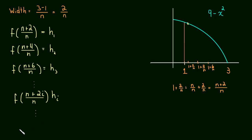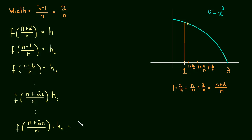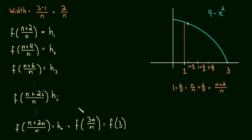Let's make sure it works for the last rectangle. The last rectangle is the n-th one — if we have 1,000 rectangles, the 1,000th is last; if we have n rectangles, the n-th is last. So this becomes f of n plus 2n over n. Simplifying: n plus 2n is 3n, so this is f of 3n over n. The n's cancel and we get f of 3, which is our last x value. This confirms the formula gives the correct height for any rectangle.